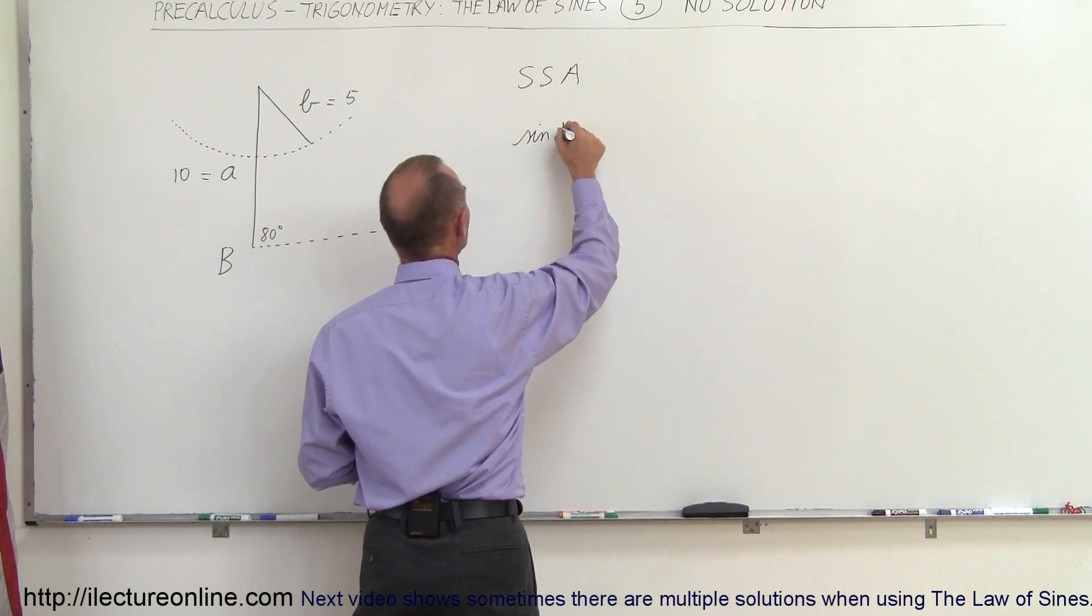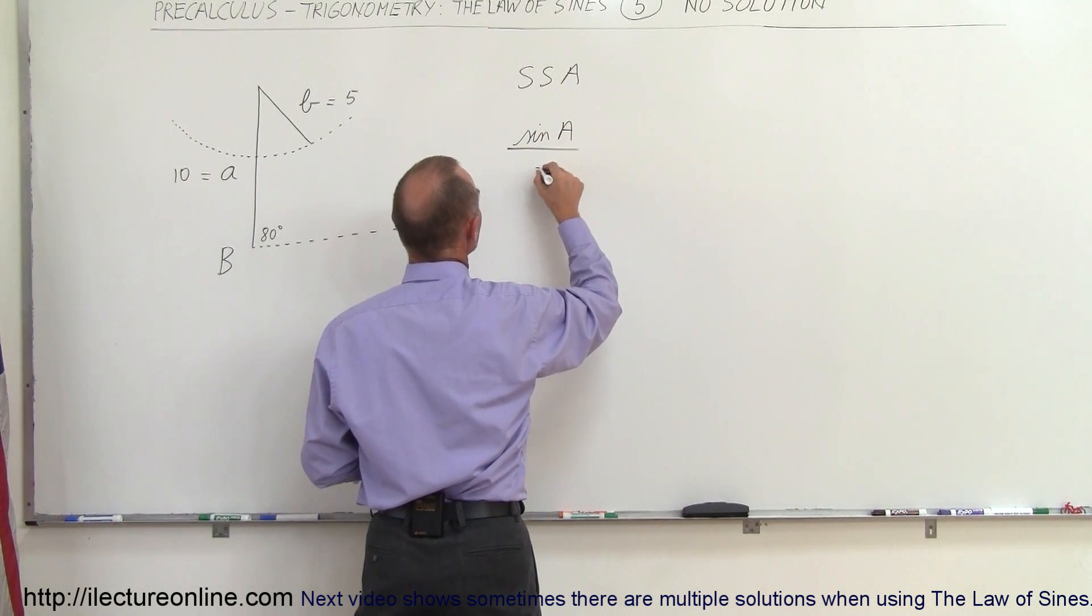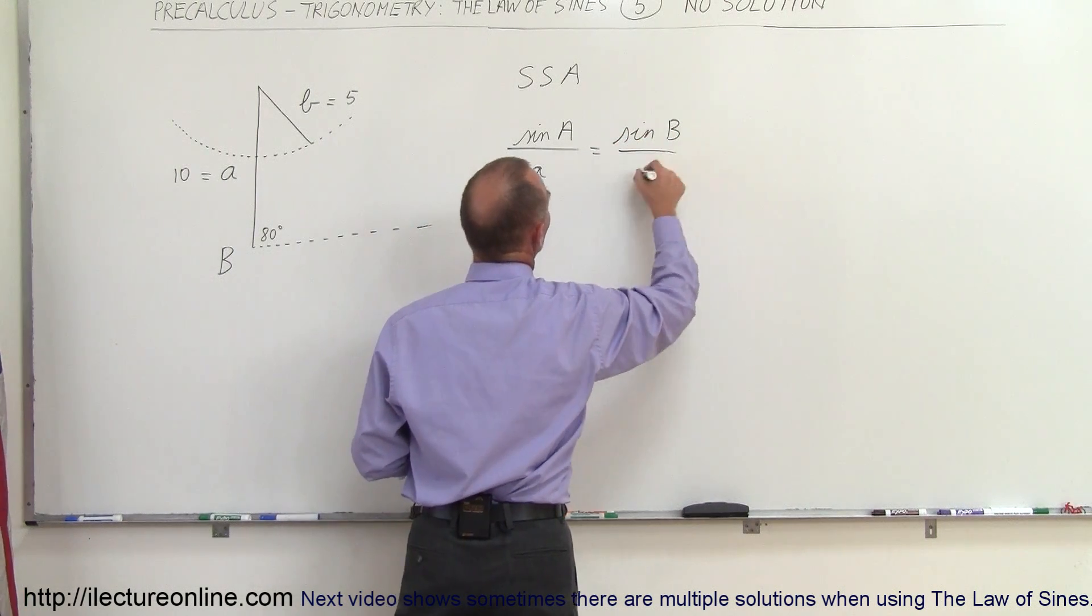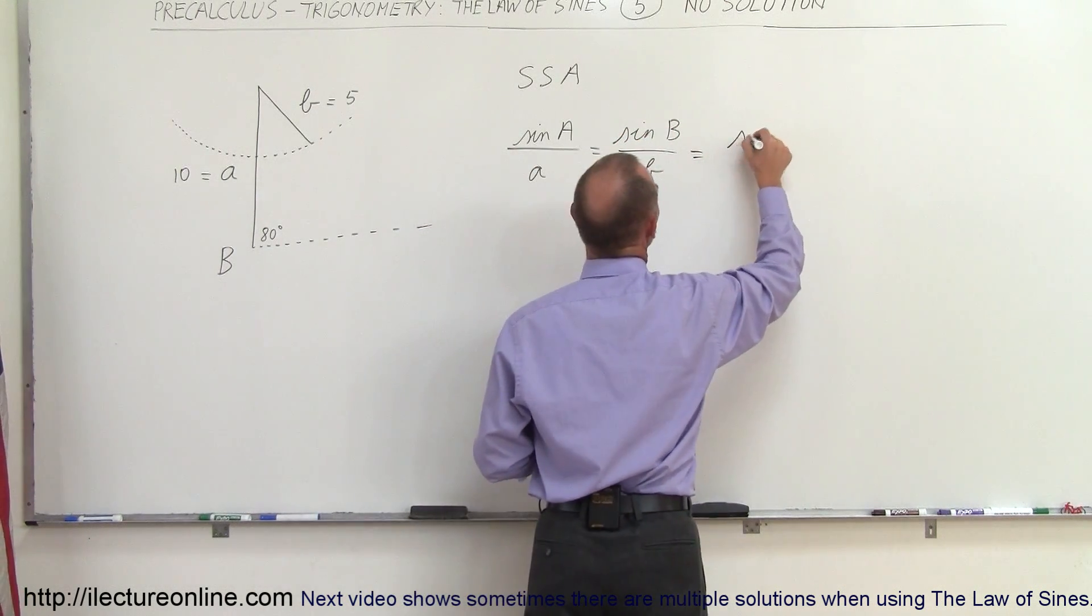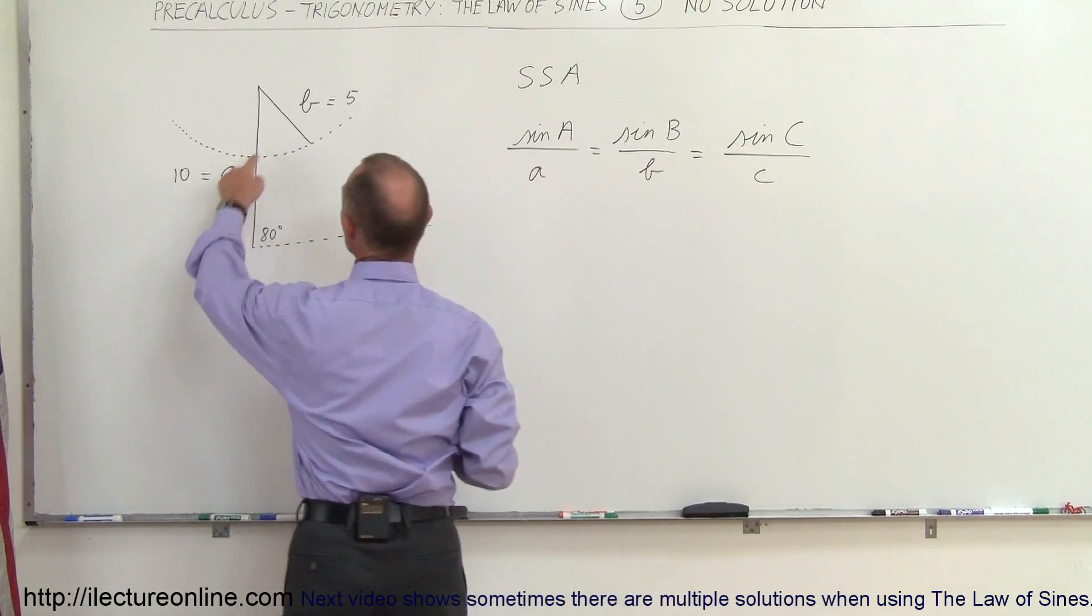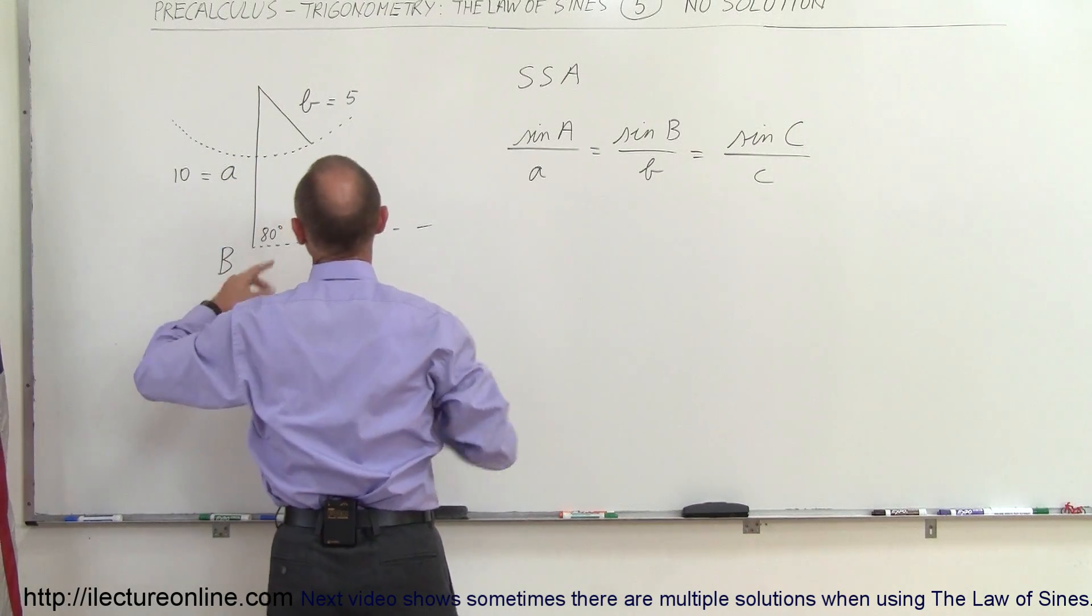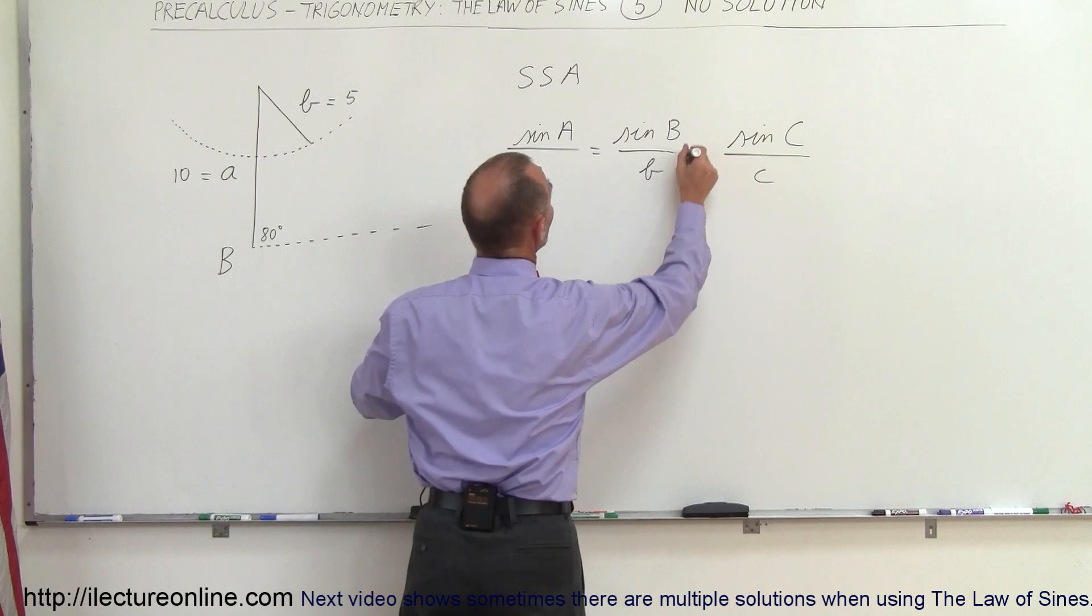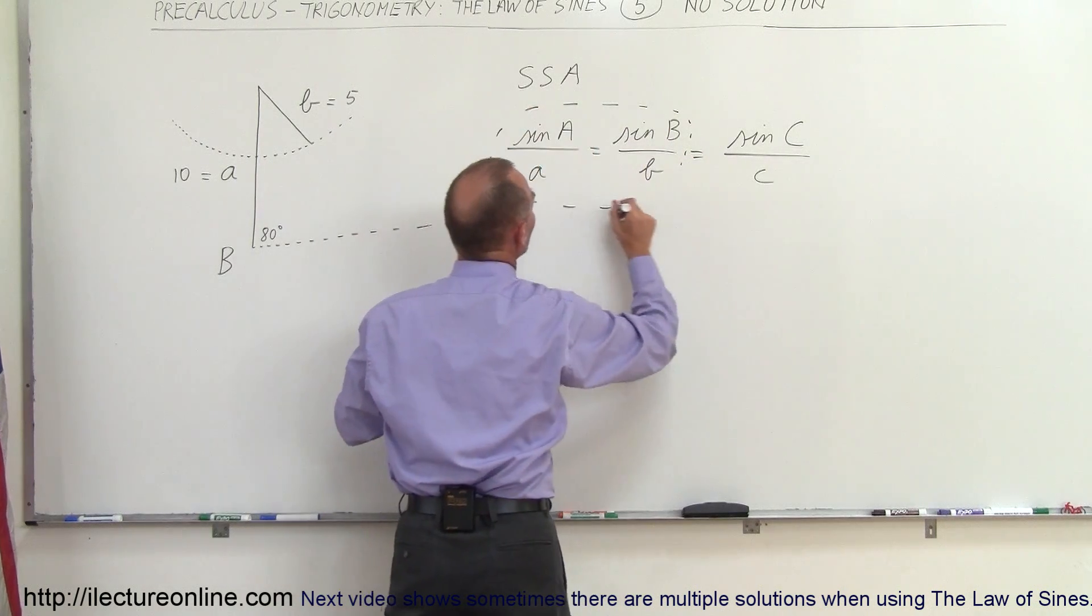You end up with sine of A divided by side A is equal to sine of B divided by side B, is equal to sine of C divided by side C. And notice they give us A, B, and B, so in that case I would try to find angle A. I would use this part of the equation to try and find angle A, and let's see what would happen.